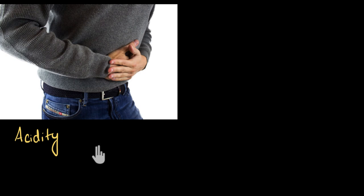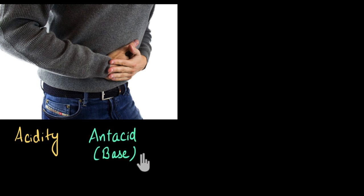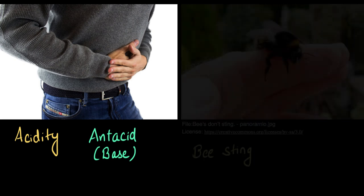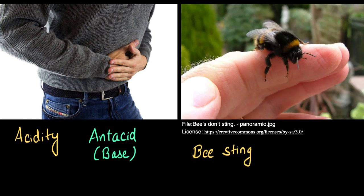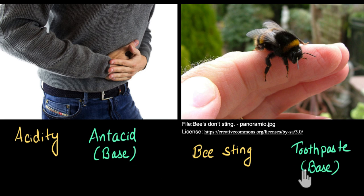Whenever people have acidity, they take a medicine commonly referred to as antacid, which is basically a base, and suddenly they get relief. Now when you get stung by a bee, people will suggest you apply toothpaste to it, which is also a base, and then you suddenly get relief.